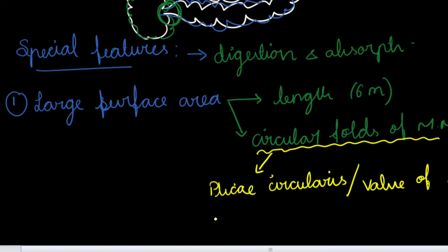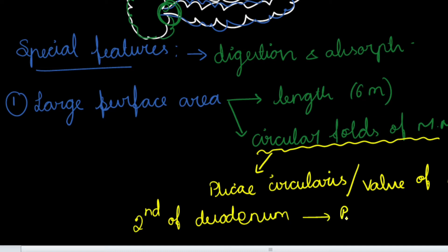The plicae circulares or valve of Kerckring arise mainly from the second part of duodenum and become prominent at the proximal half of jejunum. After that, the size of the mucosal folds gets reduced. Next, we should know regarding the villi and microvilli, which also help in increasing the surface area.